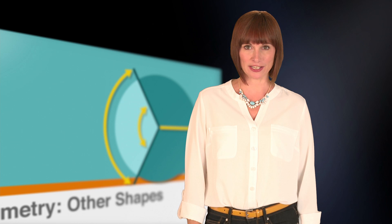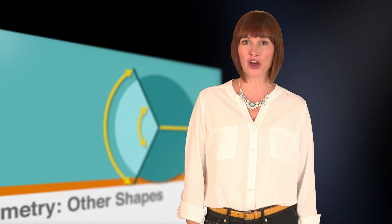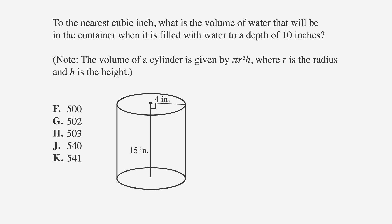Let's look at an ACT question that asks us to calculate the volume of a right circular cylinder. To the nearest cubic inch, what is the volume of water that will be in the container when it is filled with water to a depth of ten inches? Note, the volume of a cylinder is given by pi r squared h, where r is the radius and h is the height. As usual, underline the facts, circle the key words, and label the answer choices volume.